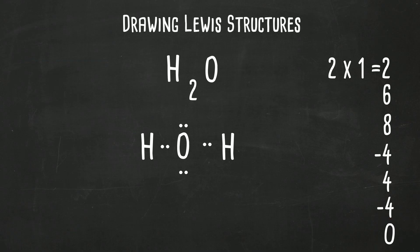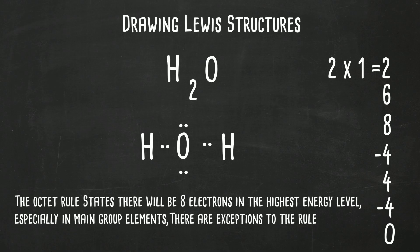Let's take just a second and go over the octet rule. The octet rule states that there will be eight electrons in the highest energy level. Now there are exceptions. For example hydrogen only needs two electrons. But it works well for many common elements such as carbon, nitrogen, oxygen, fluorine, etc.